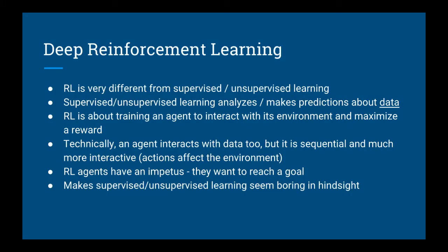Reinforcement learning is an entirely different kind of machine learning than supervised and unsupervised learning. Supervised and unsupervised learning algorithms are for analyzing and making predictions about data, whereas reinforcement learning is about training an agent to interact with an environment and maximize its reward. Of course, when it comes down to it, an agent sensing its environment is also data, but the way that it interacts with it is completely different.